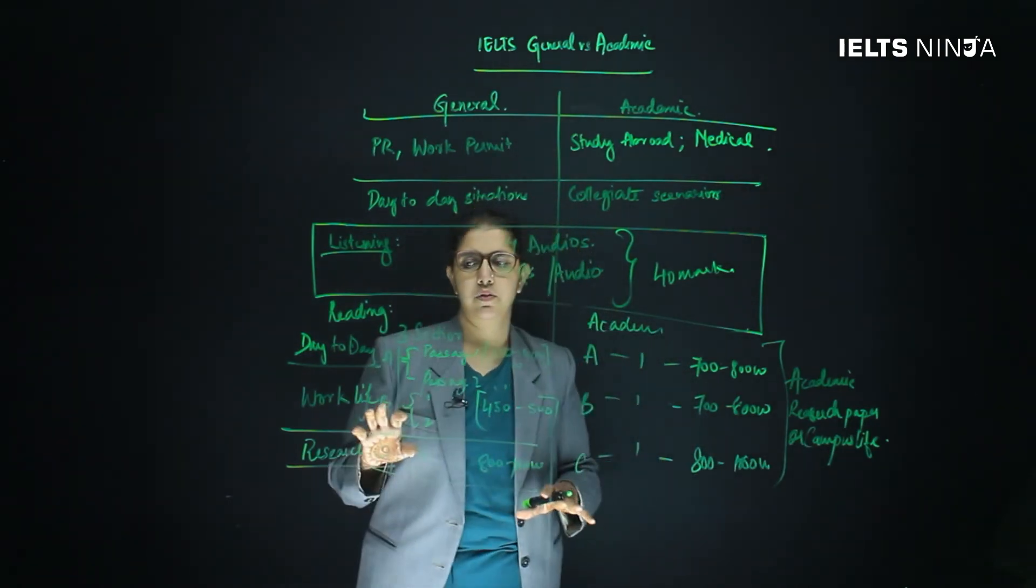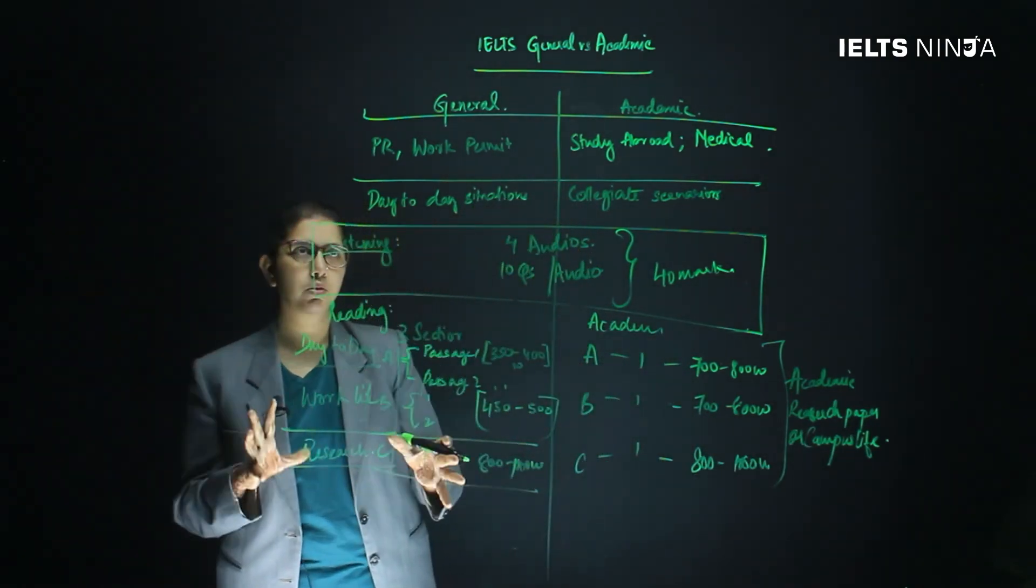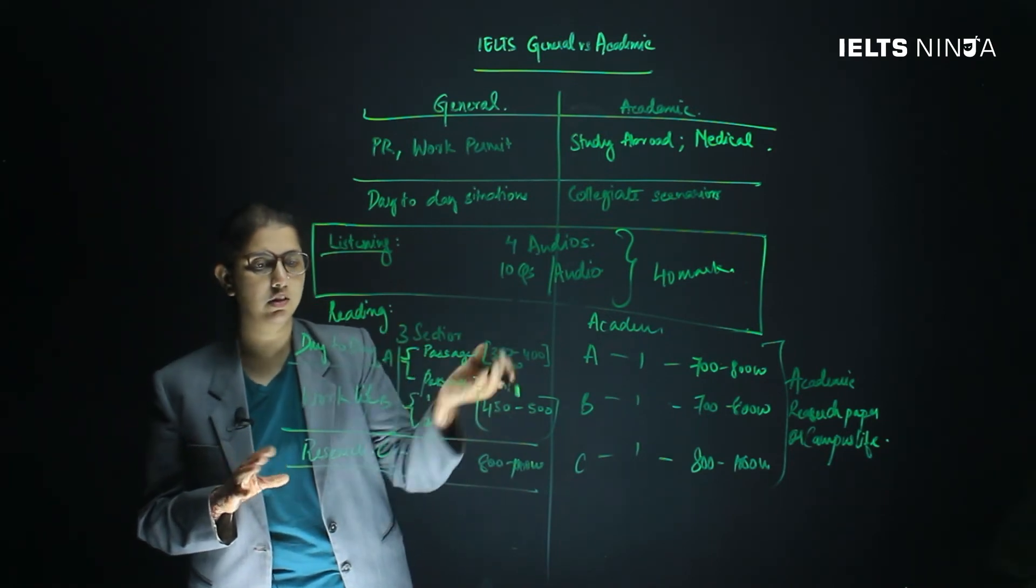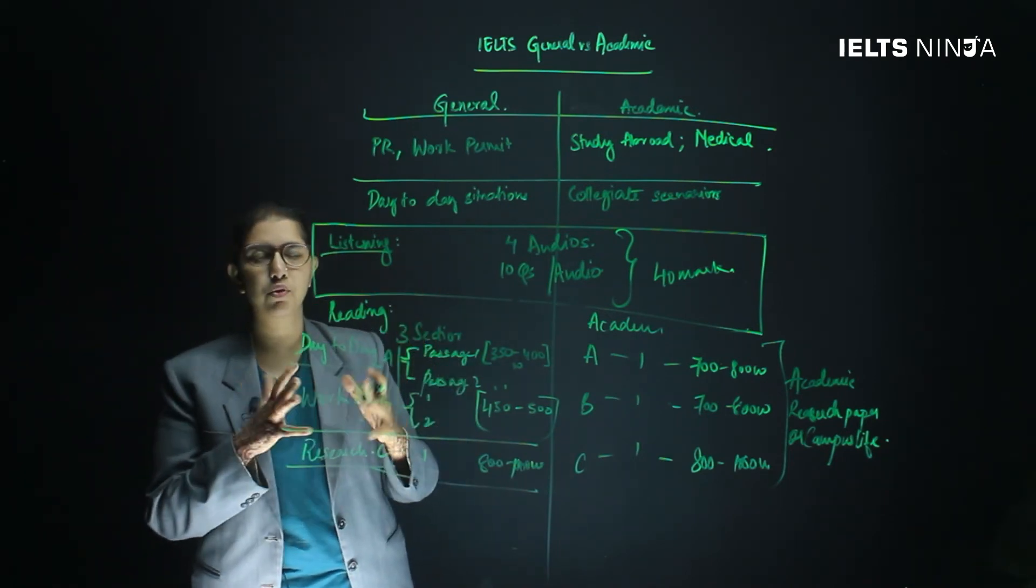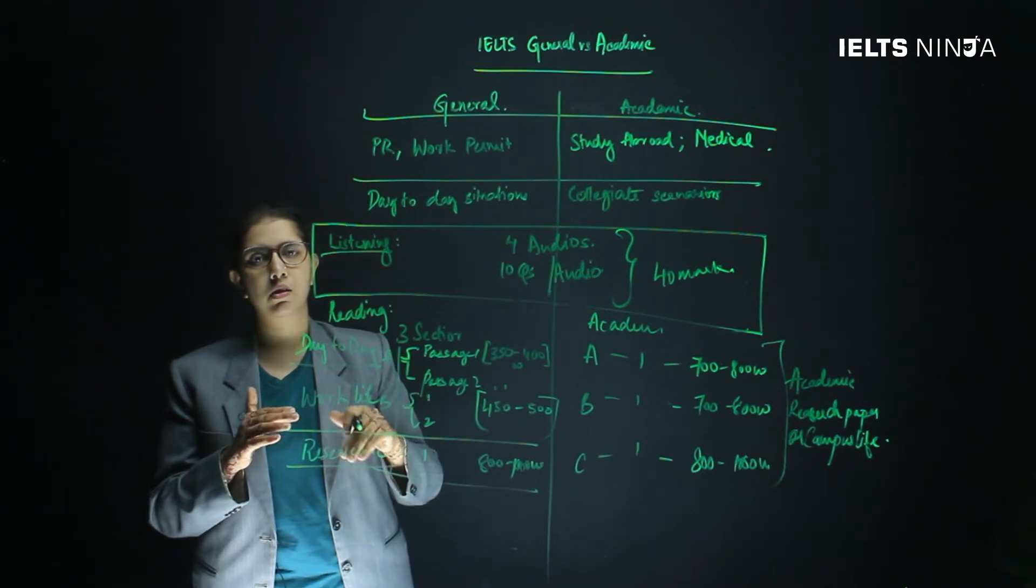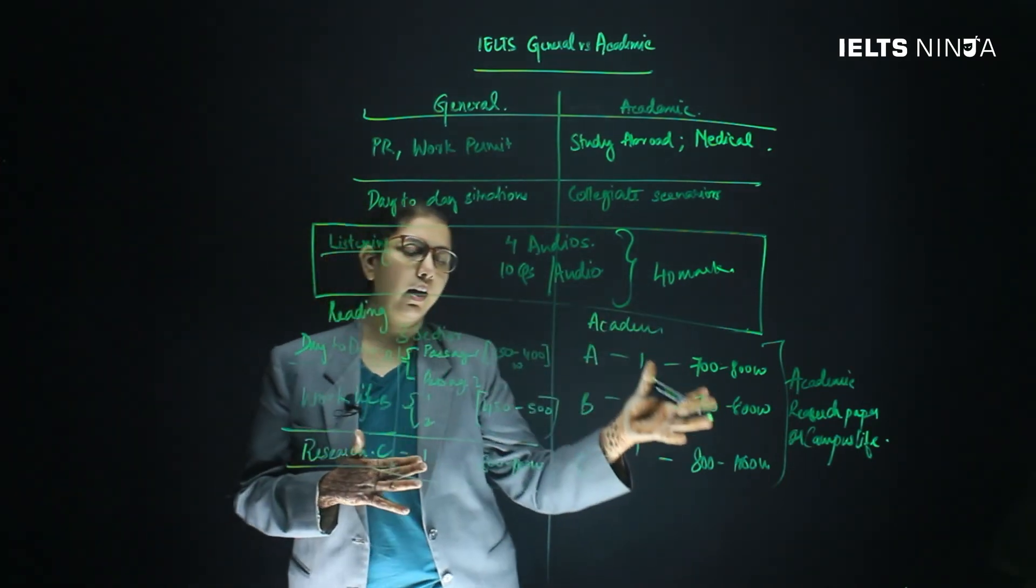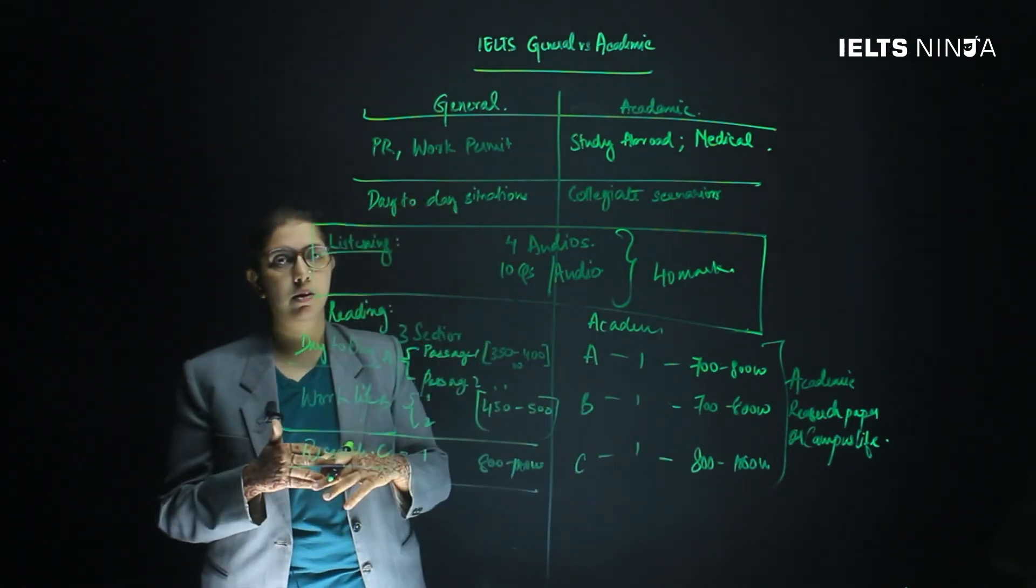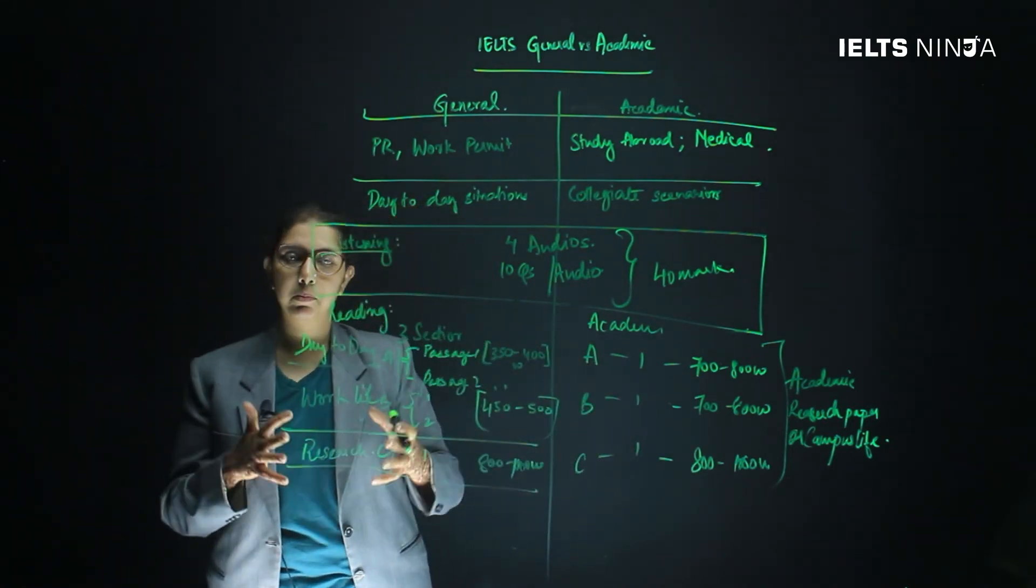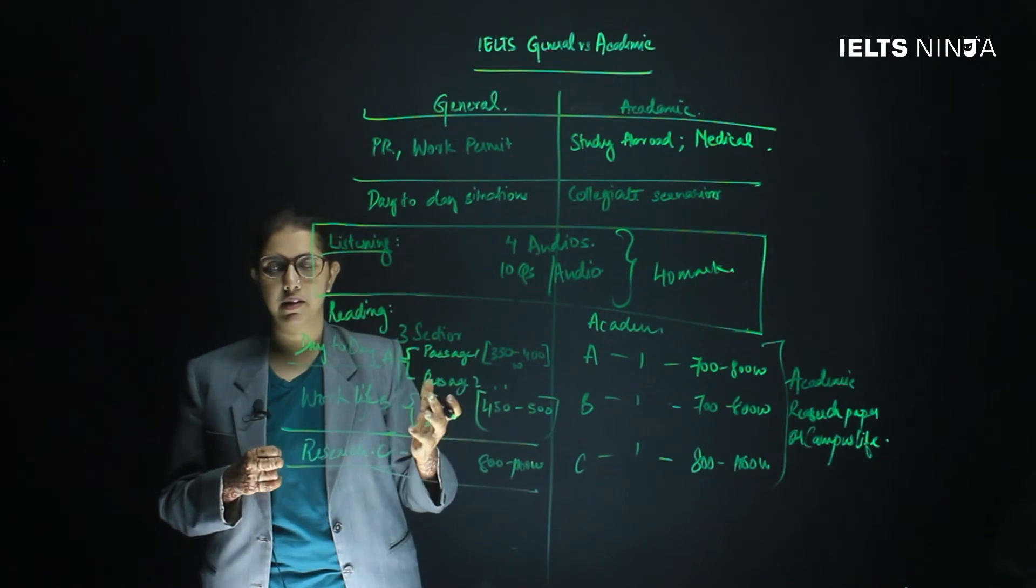Now this is as far as reading is concerned. You will notice that in the general section, a lot of focus is placed on day-to-day situations and work-life patterns, whereas the academic paper concentrates on college or campus life and research-based articles.